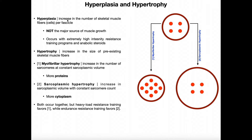Hyperplasia is defined as an increase in the number of skeletal muscle fibers, also called skeletal muscle cells, per fascicle. Basically, in order for the muscle to grow via hyperplasia, these cells have to divide and we get more muscle cells — more muscle fibers. This is not the primary mechanism for muscle growth. When you go to the gym and perform resistance training, hyperplasia either contributes nothing or very, very little.